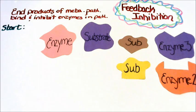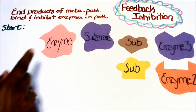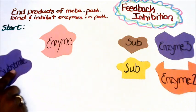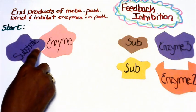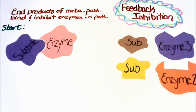Feedback inhibition is when the end products of the metabolic pathway bind and inhibit the enzymes in that pathway. To start, we have our substrate that binds to the enzyme at the active site of the enzyme.